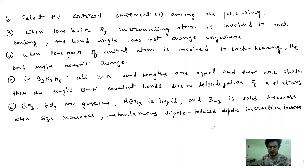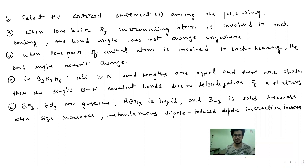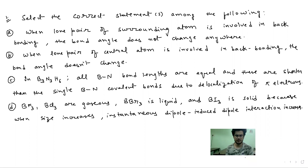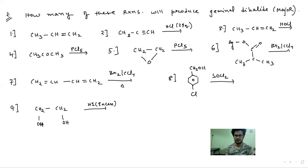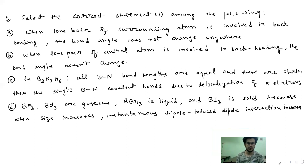Hello students, welcome again to another part of the JEE Advanced problem-solving series. You must solve these questions as they will help you a lot for your JEE Advanced preparation. The first question is from chemical bonding and the second is from organic chemistry. Please pause the video, solve the questions, and comment your answers so I can see whether you have done it correctly.